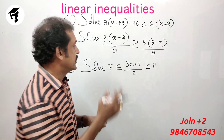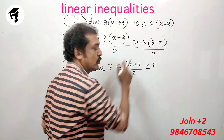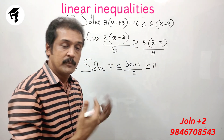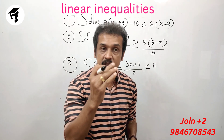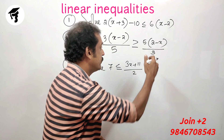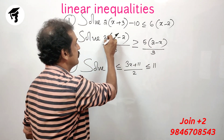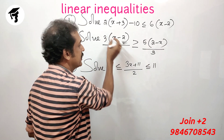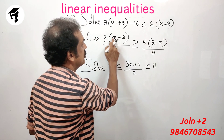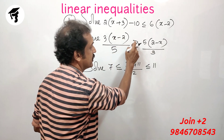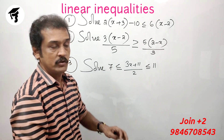So we start here. This bracket is open here. Next, cross multiply. Now the bracket is open here. 3 is equal to 3, 5 is equal to 5. So we get 9 into x minus 2 greater than or equal to 25 into 2 minus x.